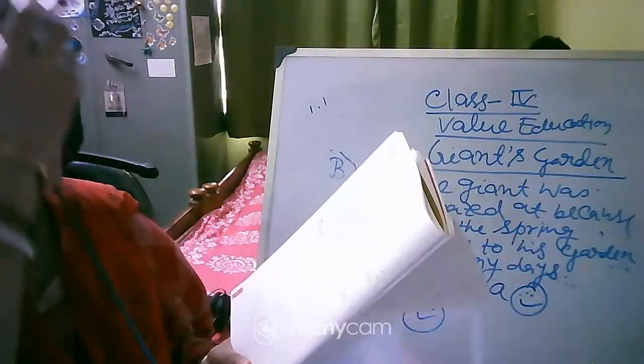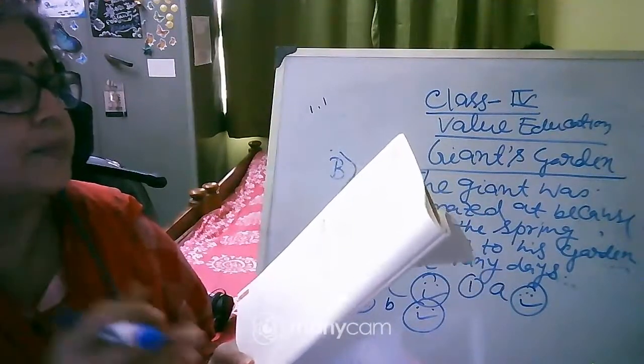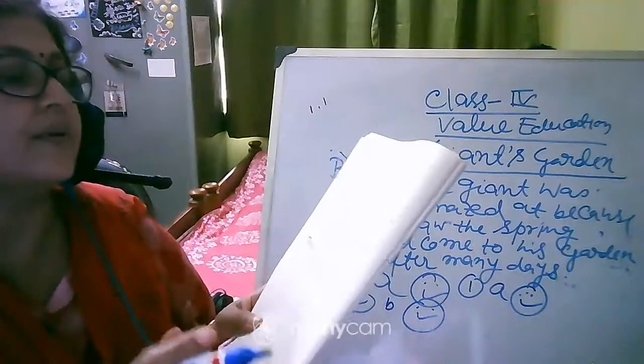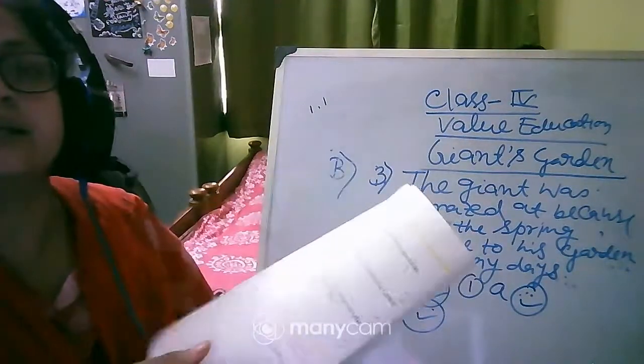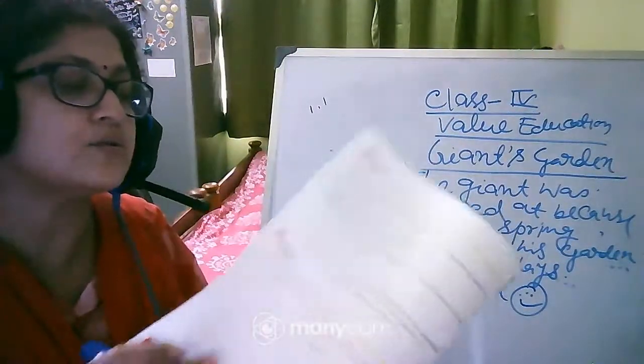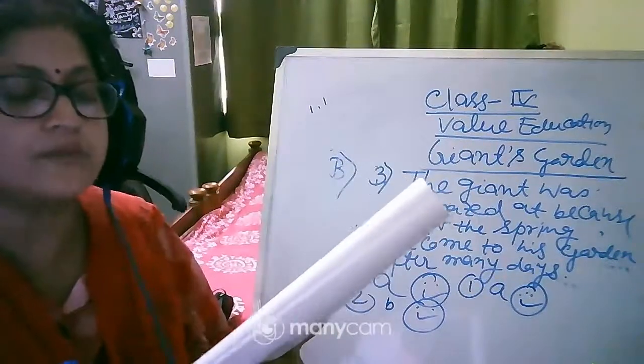So after that here 3 words they have given. Mix match letters from each word coming new words. See how many you can come with. Number 1 sharing, caring, giving. Like this you are having so many words in this value education.